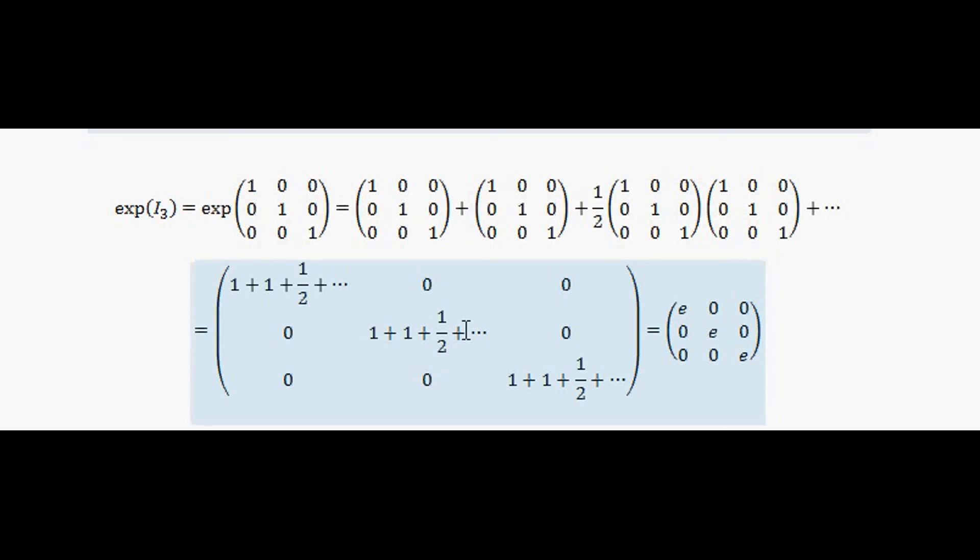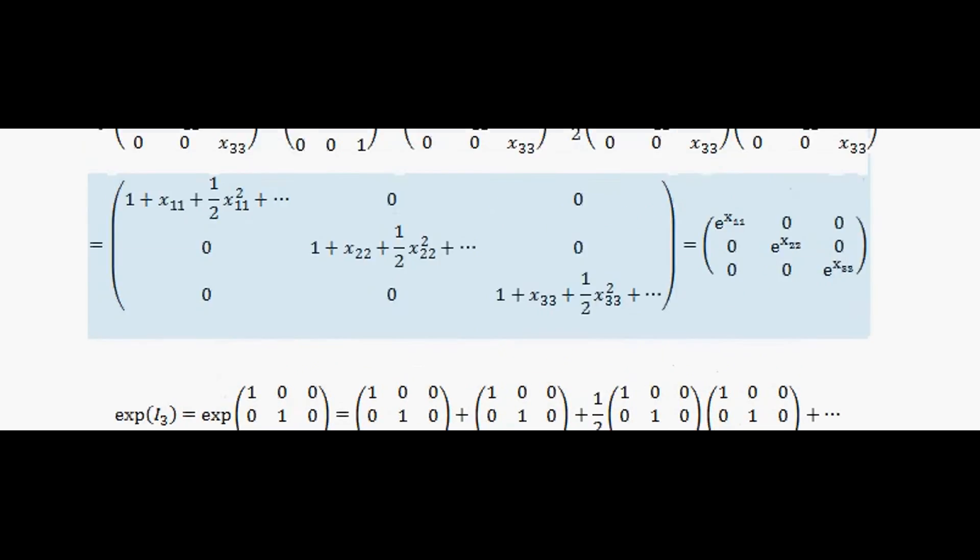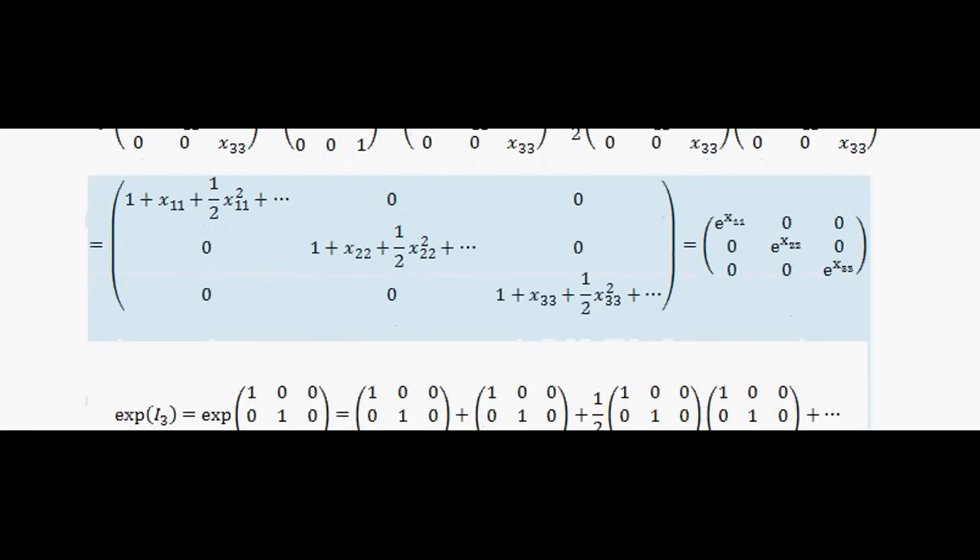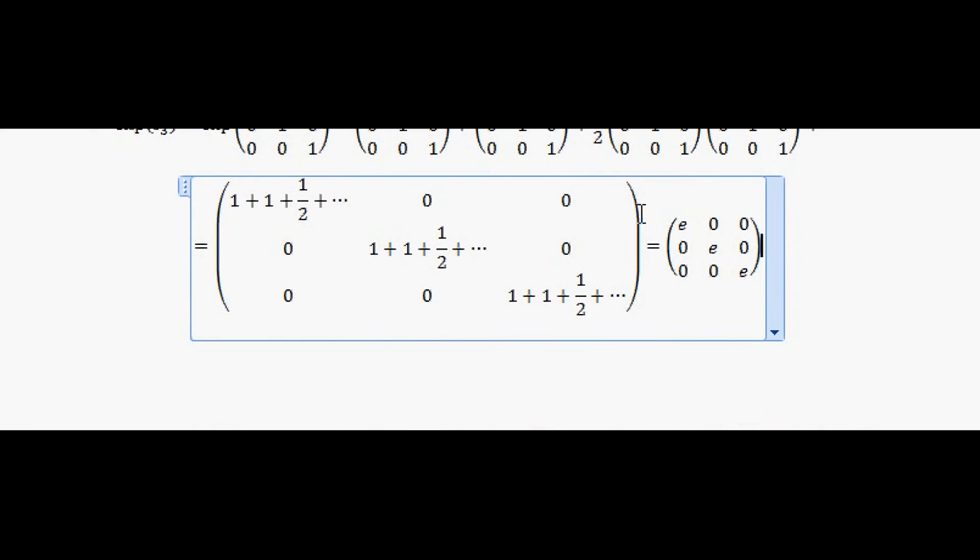with x equals 1. In other words, e to the power of 1. In other words, the exponential of an identity matrix is equal to e along every diagonal.